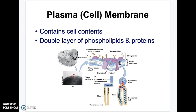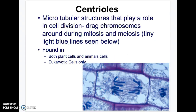Everything has a cell membrane, or plasma membrane. It keeps everything inside and is a double layer of phospholipids and proteins. These are super important for cell transport. The last thing we're going to talk about is centrioles.